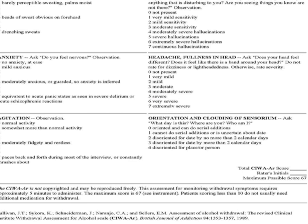For visual disturbances, ask the patient: does the light appear too bright? Is the color different? Does it hurt your eyes? Are you seeing anything disturbing? Are you seeing things you know are not there? Not present is 0. Very mild sensitivity is 1, mild is 2, moderate is 3, moderately severe hallucinations is 4, severe is 5, extremely severe is 6, and continuous hallucinations is 7.